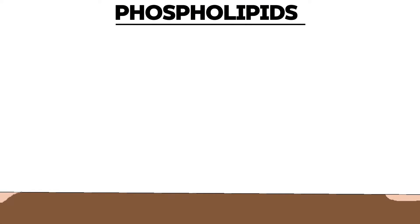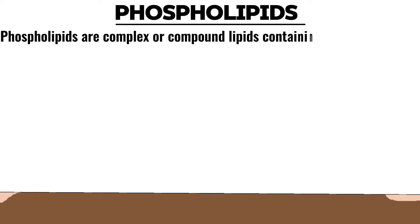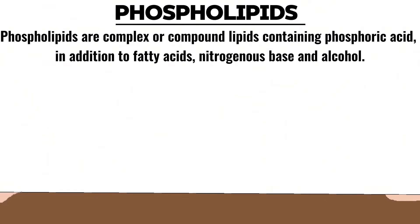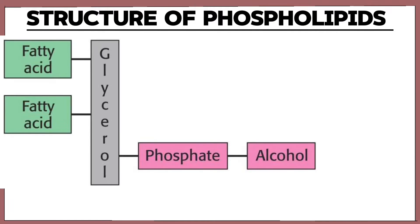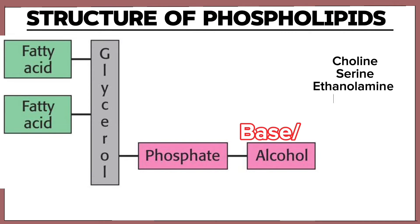Welcome to the Biochemistry Academy. In today's video we'll talk about phospholipids. Phospholipids are a type of compound or complex lipids that contains fatty acids, an alcohol, a phosphoric acid, and a nitrogenous base. The nitrogenous base or alcohol can either be choline, serine, ethanolamine, or inositol.